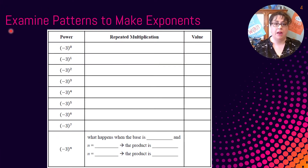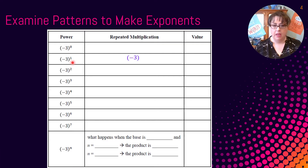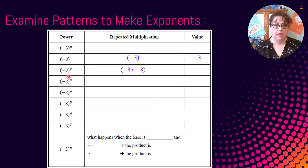We're going to examine patterns to understand exponents. Our base is negative 3 — that's the number we're going to use repeatedly as our factor. Negative 3 used just one time has a value of negative 3. For the next one, we use negative 3 as a factor two times: negative 3 times negative 3 is 9. Be careful because we're going to have positive and negative answers, since a negative times a negative is positive.